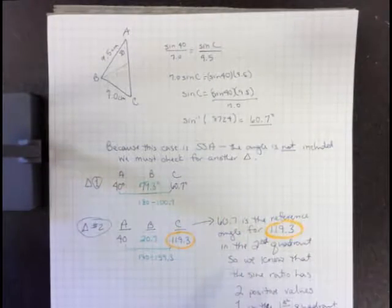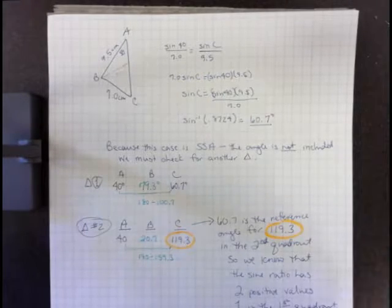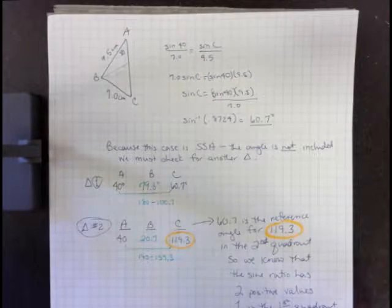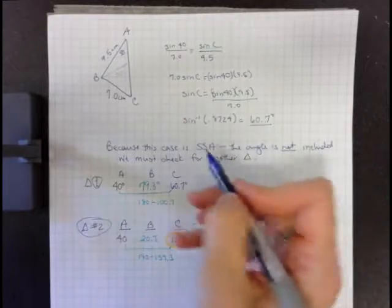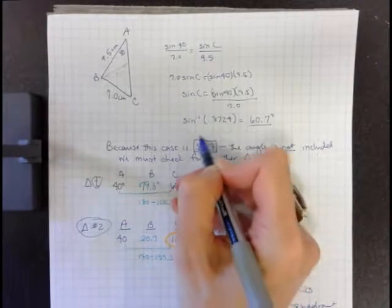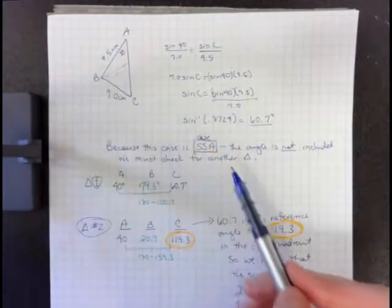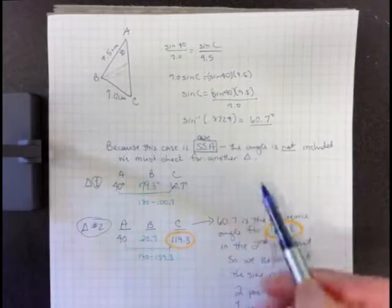One thing that we didn't discuss is really why do we know that there might be a second triangle. One of the reasons why we know that is because this is the side-side-angle case, when the angle is not included in the two sides. This is when we're going to look for two triangles.